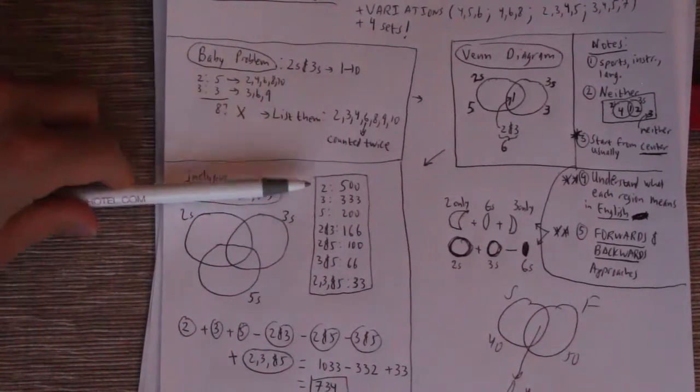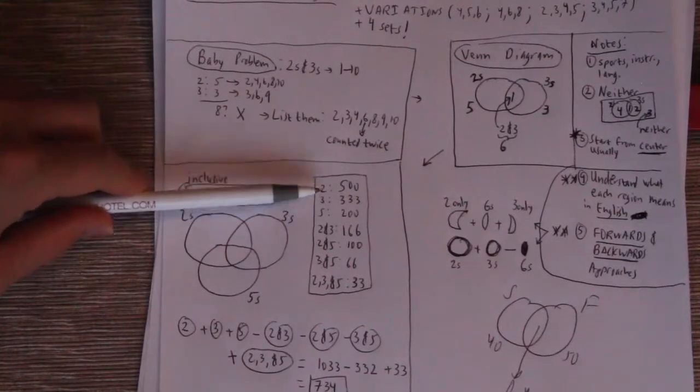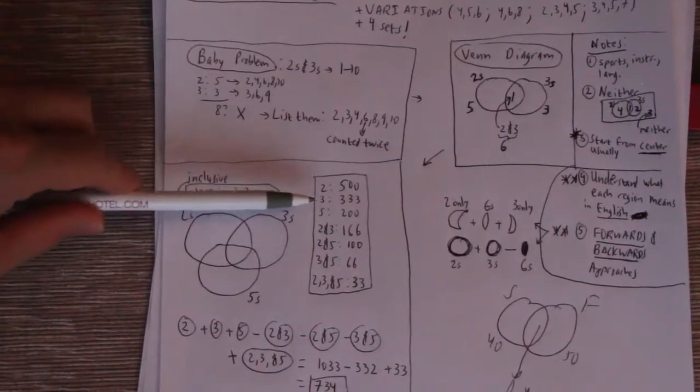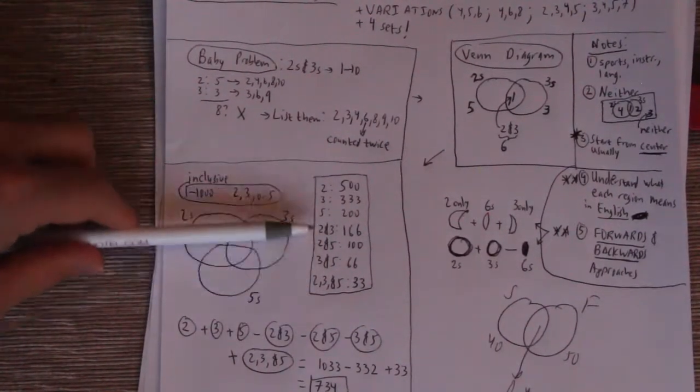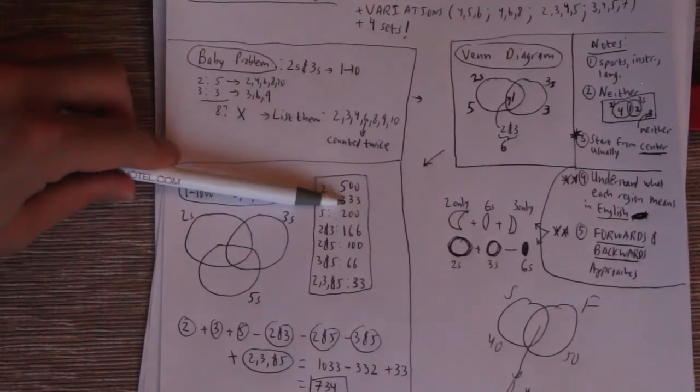So now there are 500 numbers from one to 1,000 divisible by two. So the way I'm going to get all these numbers is basically dividing 1,000 by whatever we're going to get here. So 1,000 divided by two is 500. There are 333 numbers divisible by three. That's one through 999. So there are 200 numbers divisible by five.